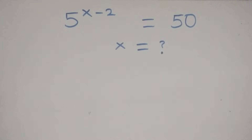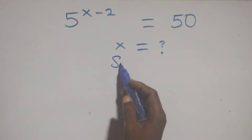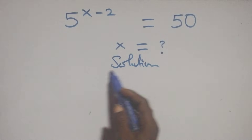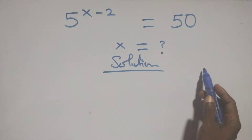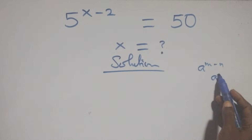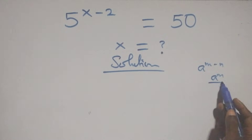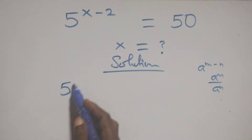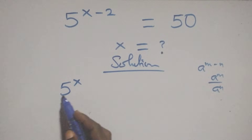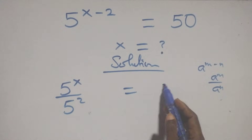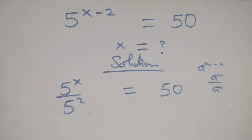Hello, you're welcome. How to solve this nice exponential equation. We have a raised to power n minus n, which is the same as a raised to power n over a raised to power n. Here we have 5 raised to power x over 5 squared equals 50.